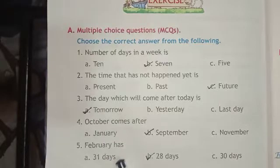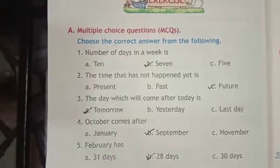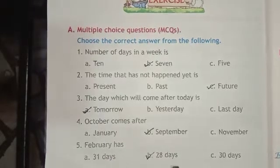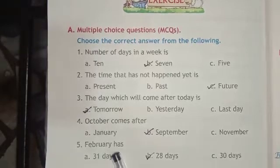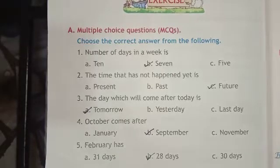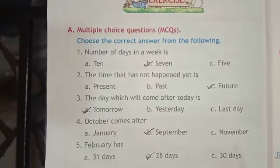Next: February has — 31 days, 28 days, or 30 days? How many days does February have? 28 days.